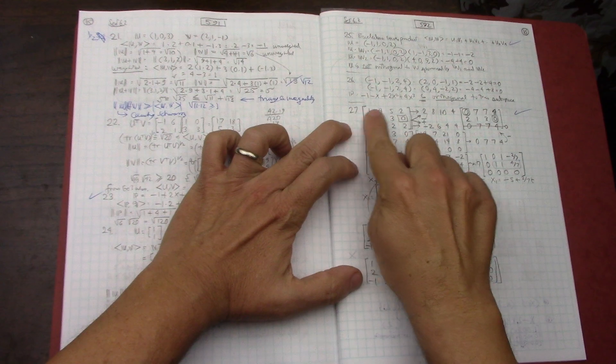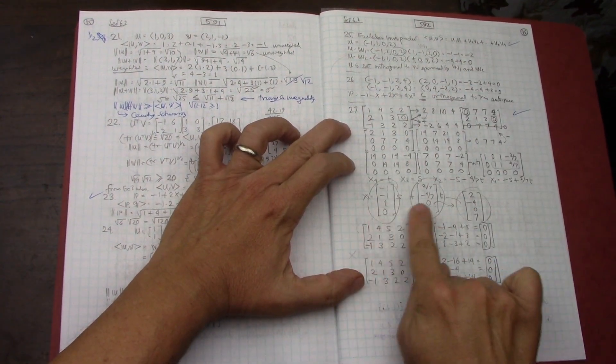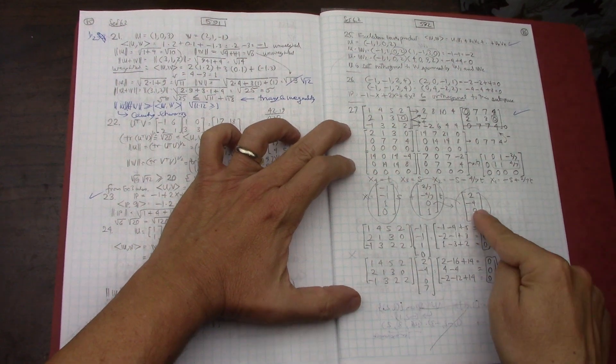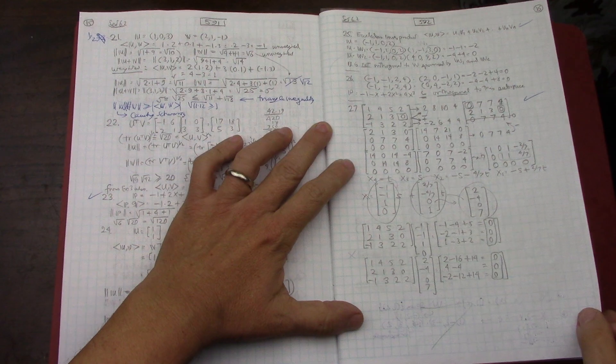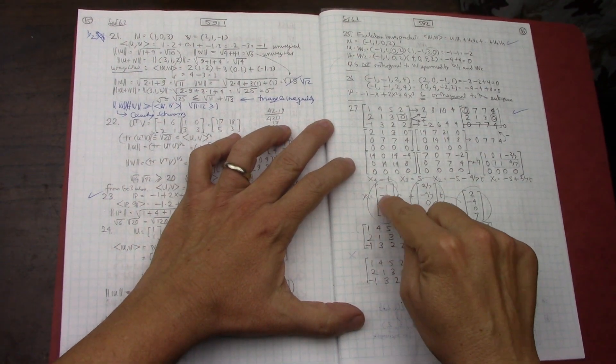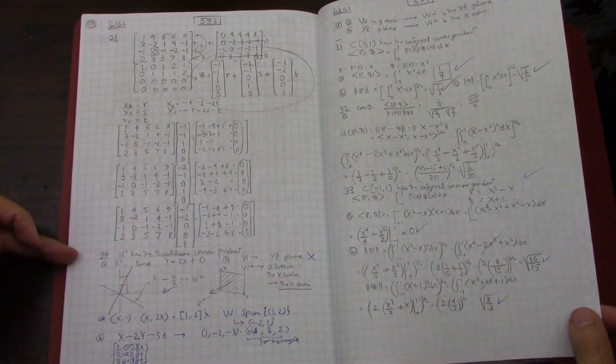This whole business of taking the vectors, making them into a matrix, reducing it, figuring out what the basis is, and then verifying that you do get zero when you multiply the basis vector to the original matrix—did that a couple of times.